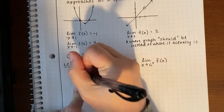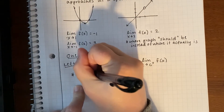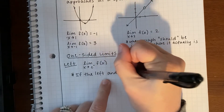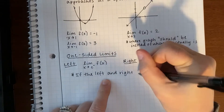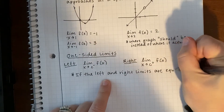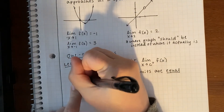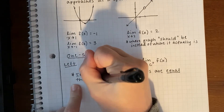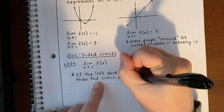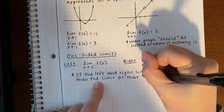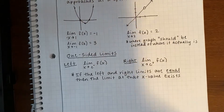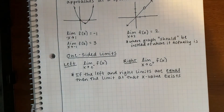Something to note with one-sided limits: if the left and right limits are equal, then the limit at that x-value exists. If they're not equal, then the limit does not exist.